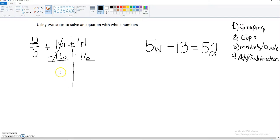We're going to bring down our u divided by 3, and then 41 minus 16 is 25.